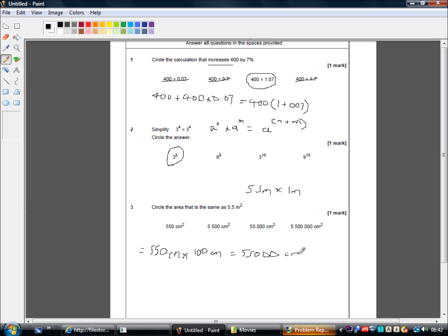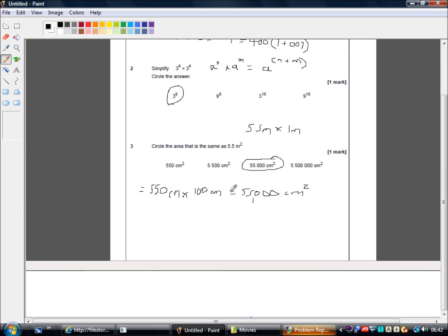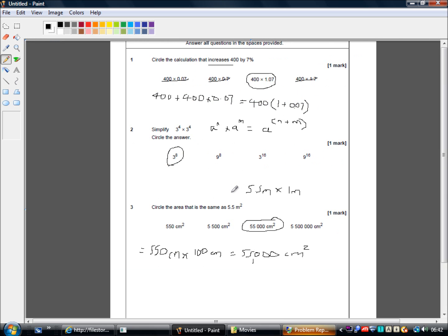And centimetres times centimetres is centimetres squared. So if we put a comma in, that's 55,000 centimetres squared in 5.5 metres squared. So our answer is this one. And that's our first three questions done. Hope that was helpful. And I'll see you in the next set of videos.